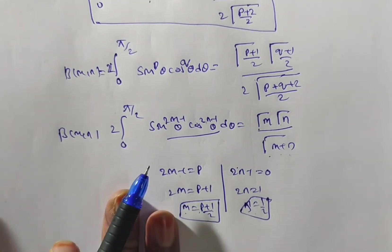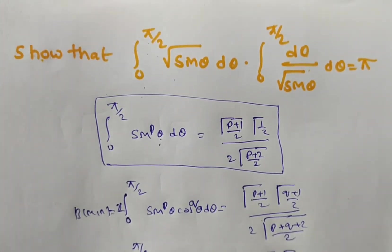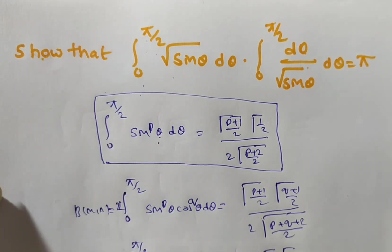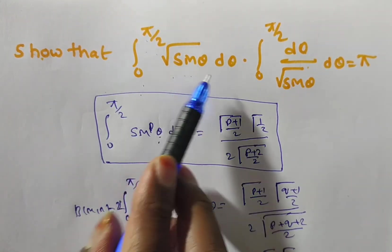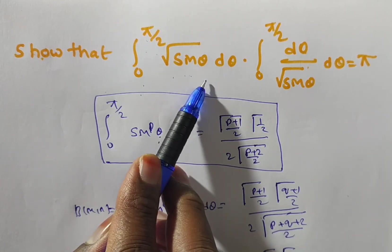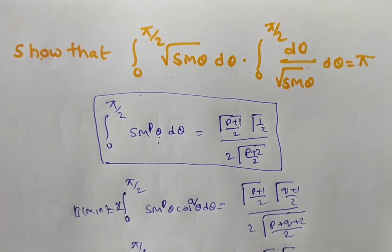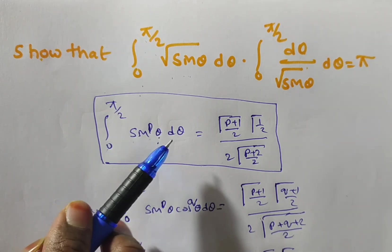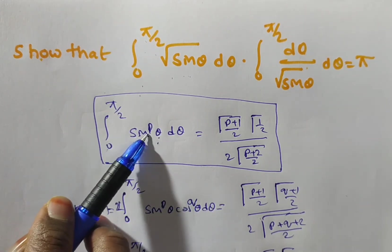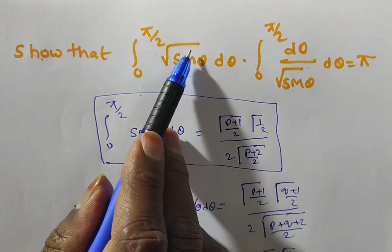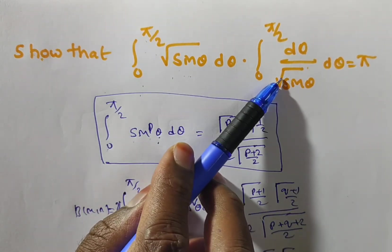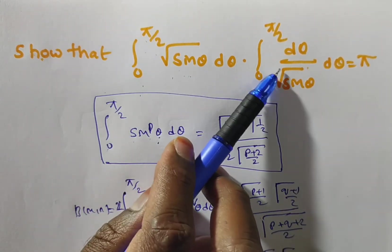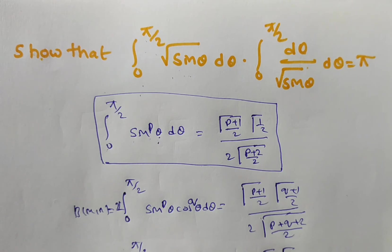Now let's solve the given problem. The first integral is ∫₀^{π/2} √(sin θ) dθ, which is sin^(1/2), so p = 1/2. The second integral is ∫₀^{π/2} 1/√(sin θ) dθ, which is sin^(−1/2), so p = −1/2. Substituting these values will give us π.